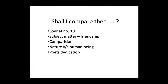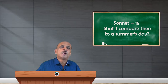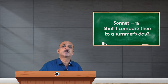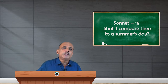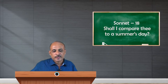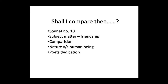Shakespeare is known for two long narrative poems — Venus and Adonis and Lucrece. Apart from that, he is known for his 154 sonnets. Shakespeare's sonnets are basically categorized in terms of their theme and subject matter.